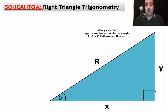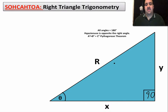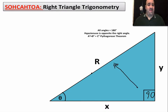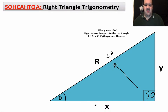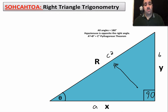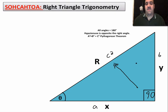Right here we have a right triangle — there's a 90 degree angle inside. We know that all angles add up to 180 degrees in a triangle from geometry, and we know that the hypotenuse is always opposite the right angle. You probably know Pythagorean theorem: a² + b² = c², or in our notation, x² + y² = r².